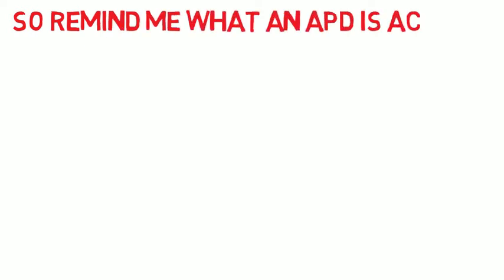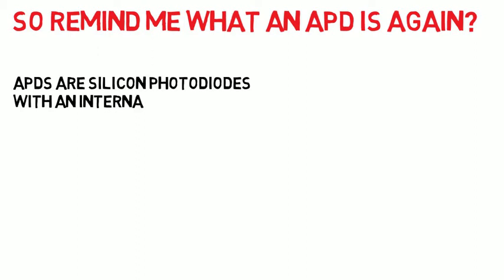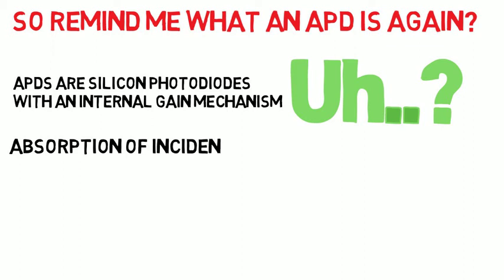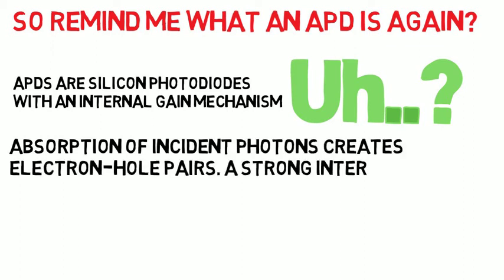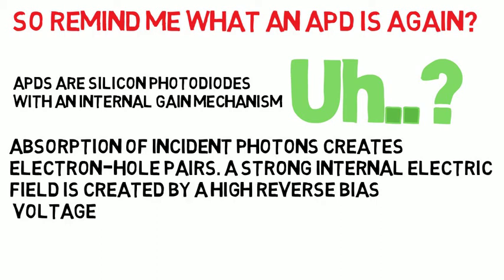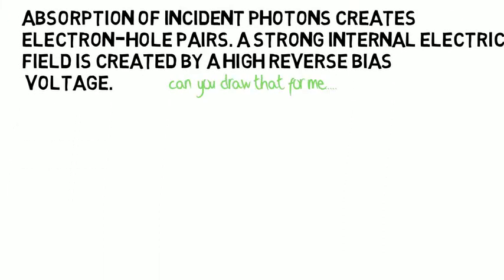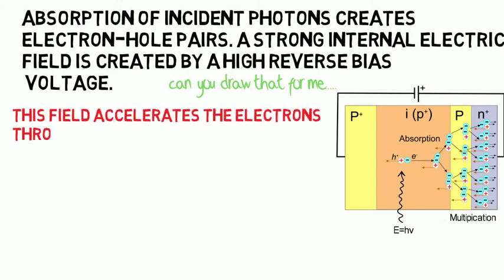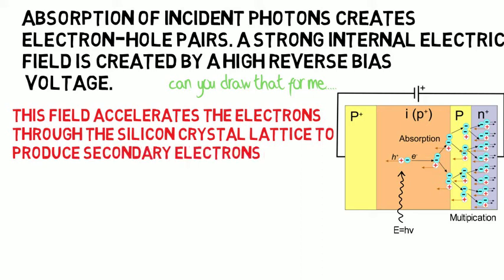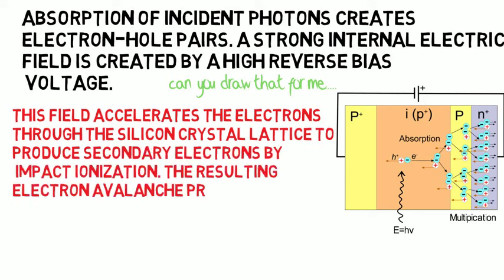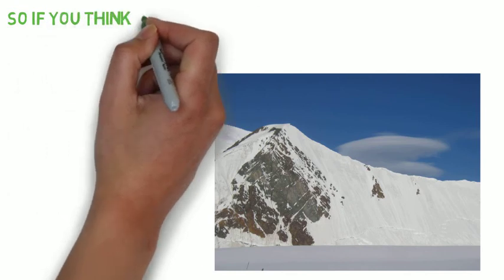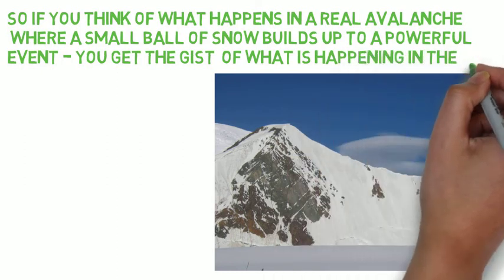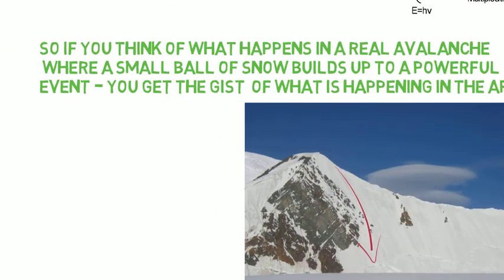So remind me what an APD is again. Basically, APDs are silicon photodiodes with an internal gain mechanism. Absorption of incident photons creates electron-hole pairs. A strong internal electric field is created by a high reverse bias voltage. This field accelerates the electrons through the silicon crystal lattice to produce secondary electrons by impact ionization, and the resulting electron avalanche produces a high gain. If you think of what happens in a real avalanche, where a small ball of snow builds up to a powerful event, you get the gist of what is happening in the APD.